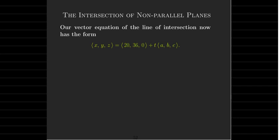And then we said we can write our vector equation of the line as our initial vector plus t times the direction vector, which we don't know. So we're going to assume it has components a, b, and c.